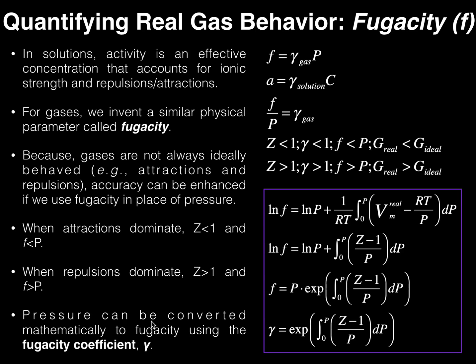A simple problem is being given a pressure and having to calculate the fugacity — these are interconverted using the fugacity coefficient gamma. The fugacity is an effective pressure that takes into account attractions and repulsions within the gas. The calculated pressure P is really just mathematical, but it does not mean that's how the gas is actually behaving. Even though you calculate a pressure of 10 bar, the gas may be behaving as if it were 15 bar — in that case the fugacity coefficient would be 1.5.